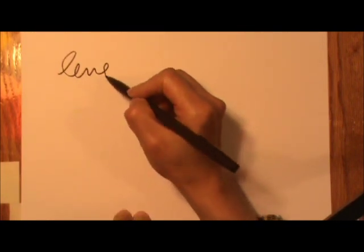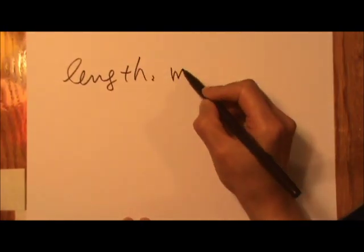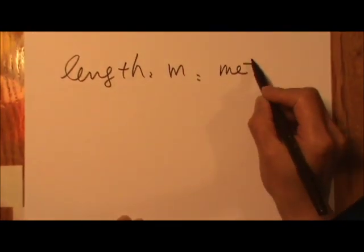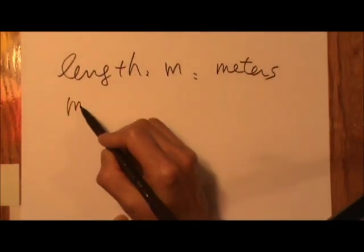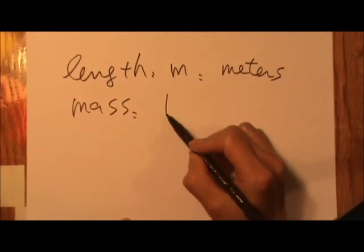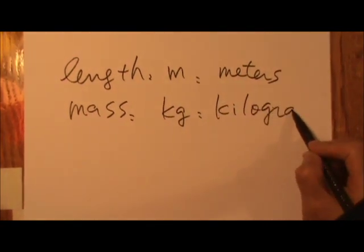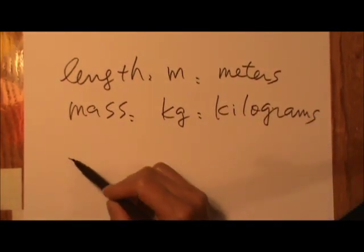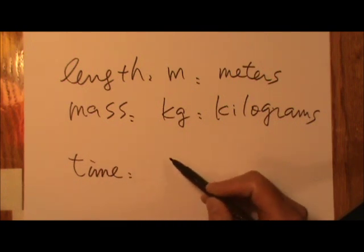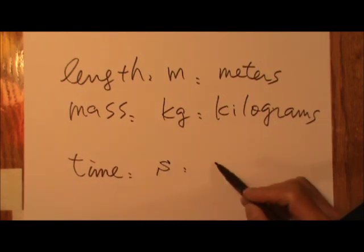For length we use little m for meters. For mass we use kg for kilograms. For time we use little s for seconds.